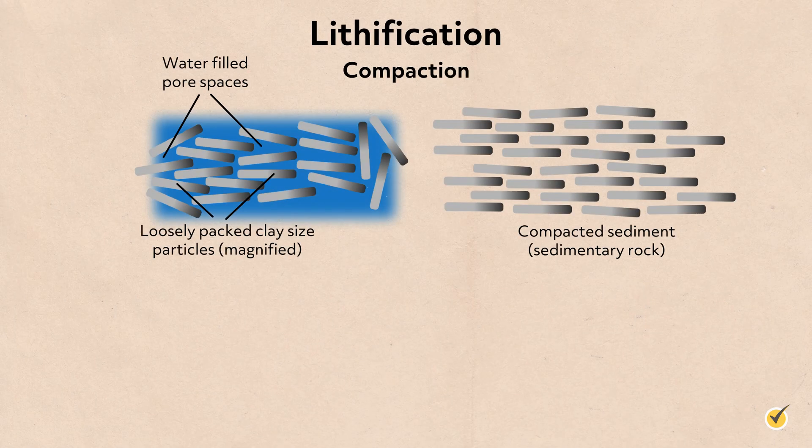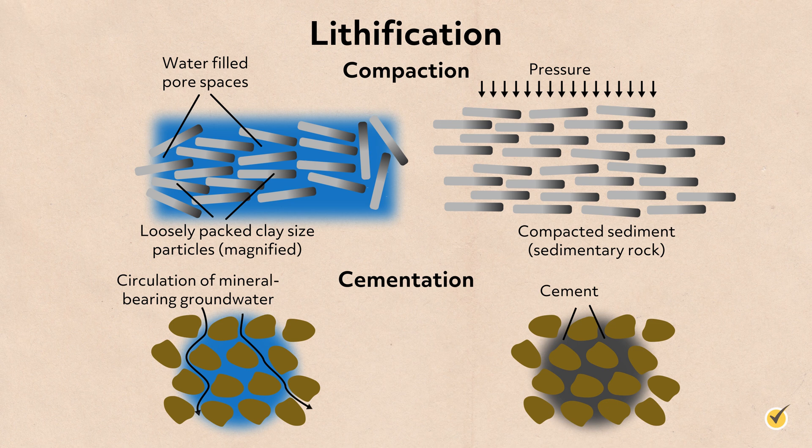Sedimentary rocks form from the deposition of sediment, but how exactly? Sediments turn into sedimentary rock through the process of lithification, which involves compaction and cementation. As sediments are buried by overlying material, the pressure eventually compacts the sediment so much that all available pore space is eliminated and essentially glues the sediment together — voilà, sedimentary rock.